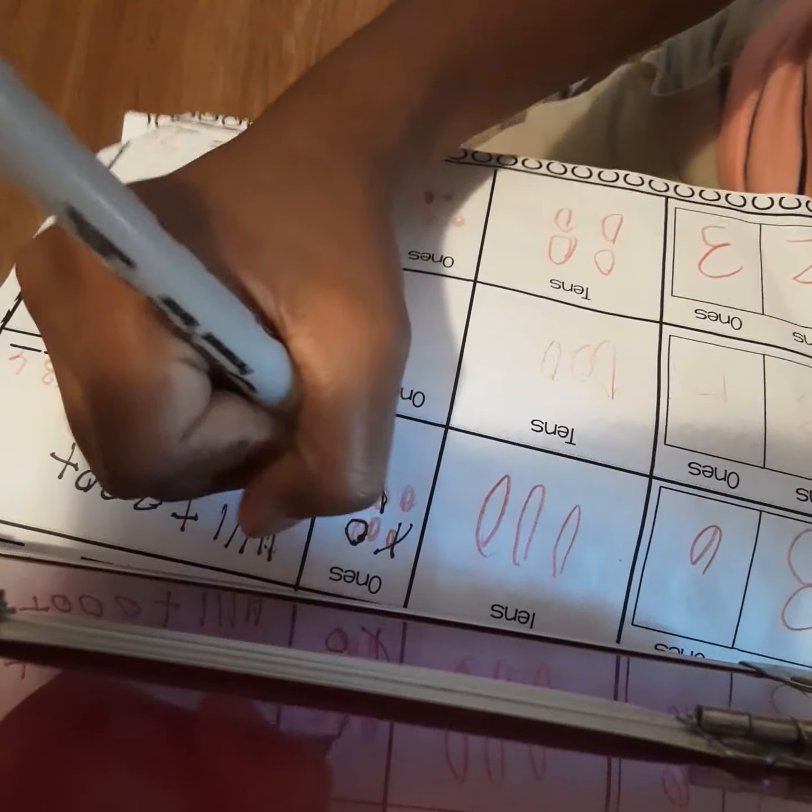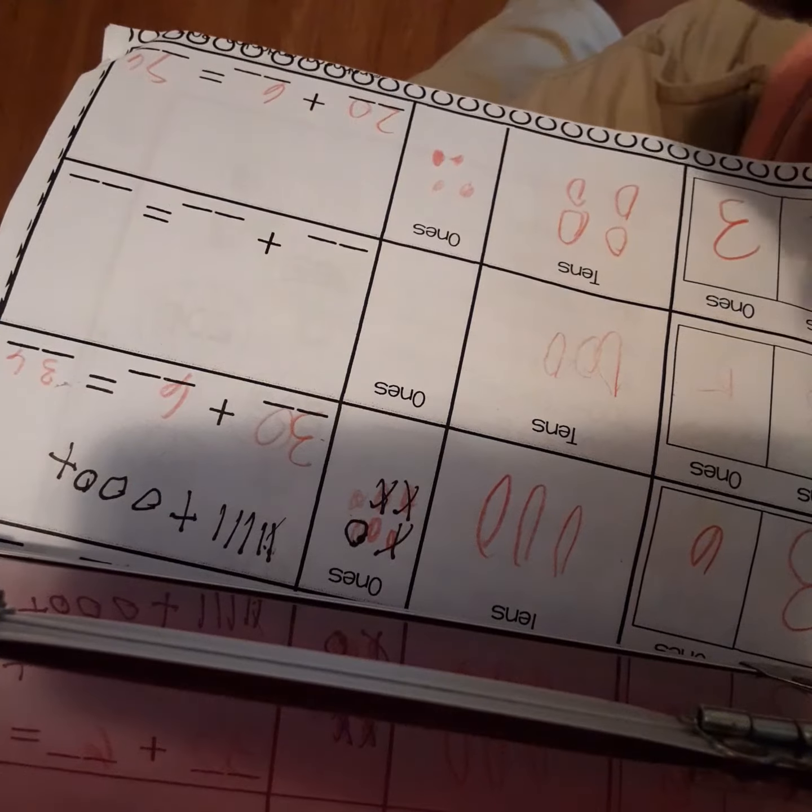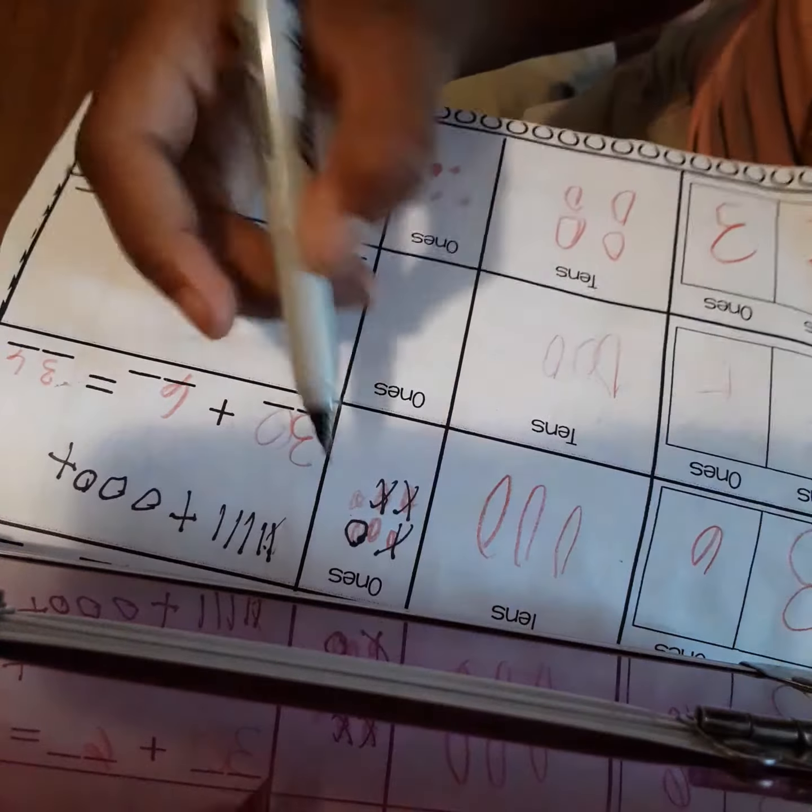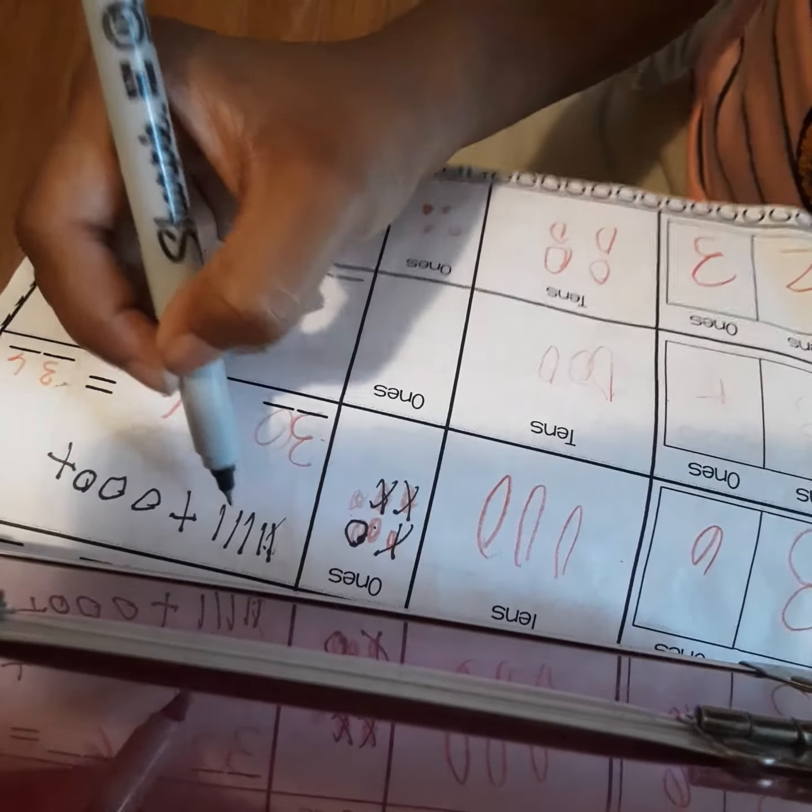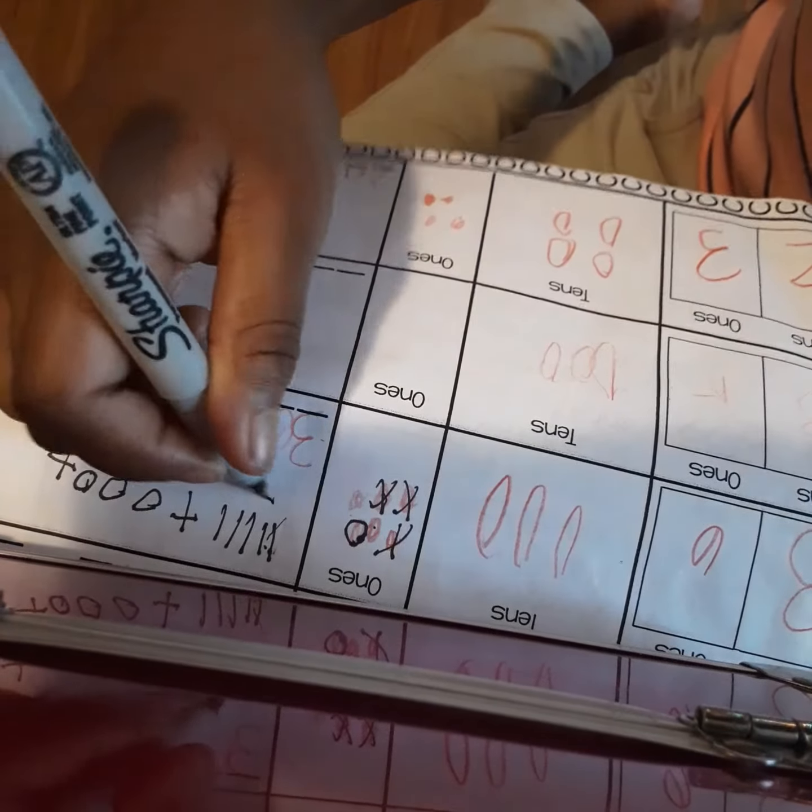So if we X this out, circle it, and then we X this out, X that out, and then we're going to count: one, two, three, four, five, six, seven, eight, nine, ten.